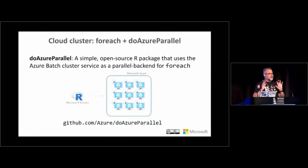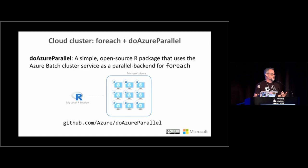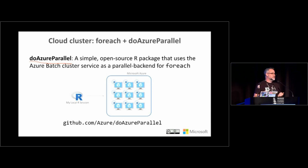Let's take it a step further — rather than running that computation on one machine, let's generate a cluster of machines and distribute those computations across the cluster. This is doAzureParallel, available on GitHub, which generates that cluster for you in the Azure cloud. You can then use foreach to farm computations out to the components of the cluster, typically running multiple iterations on each virtual machine according to how many CPUs are available.